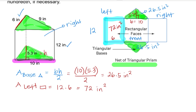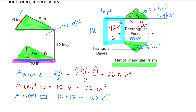Now let us find the area of the front. The front has a base of 10 and a height of 12. The area of the front of the figure — which is also a rectangle, but with a different width — is 10 times 12, which gives us 120 inches squared.